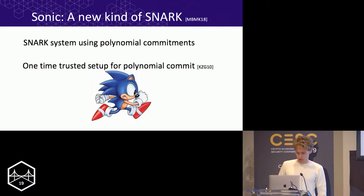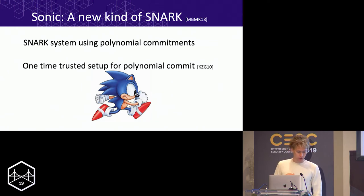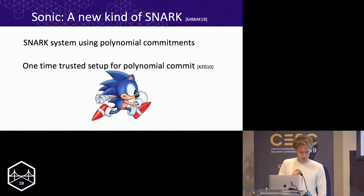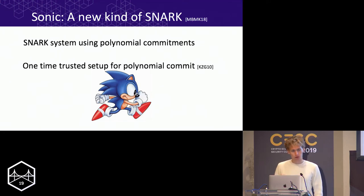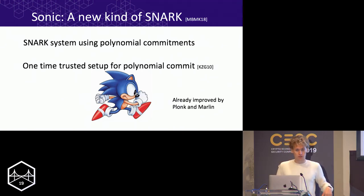At the end of 2018, Maller and others introduced a proof system called Sonic, which is a new kind of SNARK that uses only polynomial commitments. There's only a one-time trusted setup, so it doesn't have Hawk's problem of needing a new setup for every functionality. Marlin and Plonk are improvements to Sonic. All of these proof systems just use polynomial commitments.